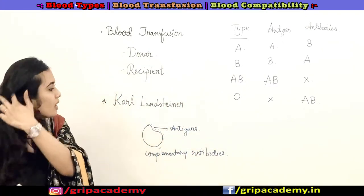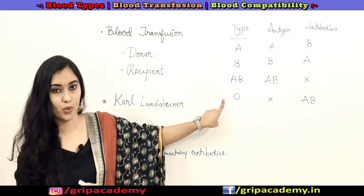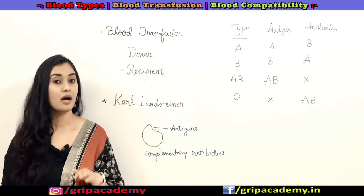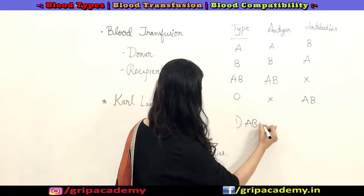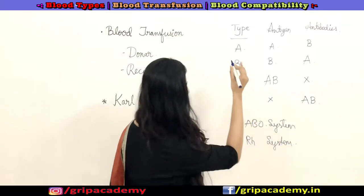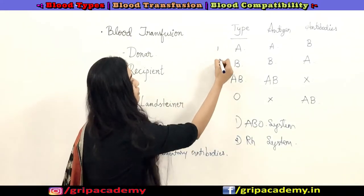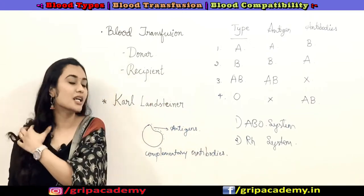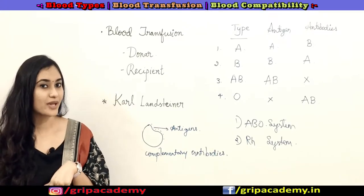Based on the presence and absence of antigens, we have broadly classified blood groups into four types: A, B, AB, and O. There are many types of blood grouping systems, but two are very important: one is the ABO system and another is the Rh system. I have already discussed the ABO system. Now, you would have heard terms like A positive, B positive, or O negative — so what is this positive and negative? That is the Rh system.